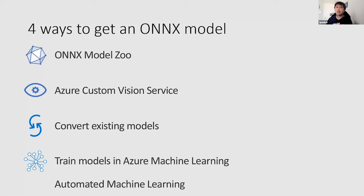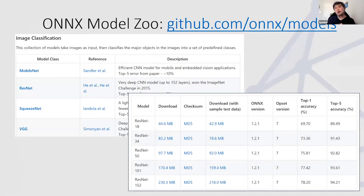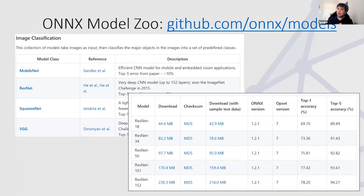There are four ways to get an ONYX model: using the ONYX Model Zoo, using a custom vision service, converting existing models trained in PyTorch or TensorFlow, or training models using automated machine learning techniques. Think of ONYX like PDF — you write in different word processors, and PDF is a format that lets you view it on different machines without requiring the original software, as long as you have any PDF viewer.